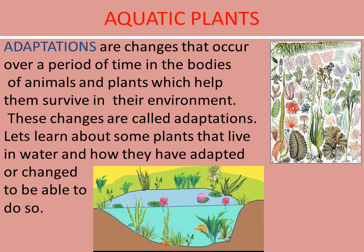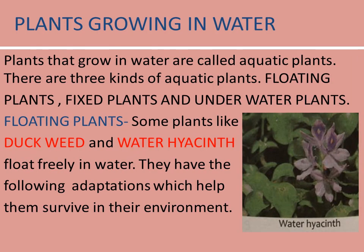Adaptations are changes that occur over a period of time in the bodies of animals and plants, which help them survive in their environment. These changes are called adaptations. Let's learn about some plants that live in water and how they have adapted, or changed, to be able to do so.